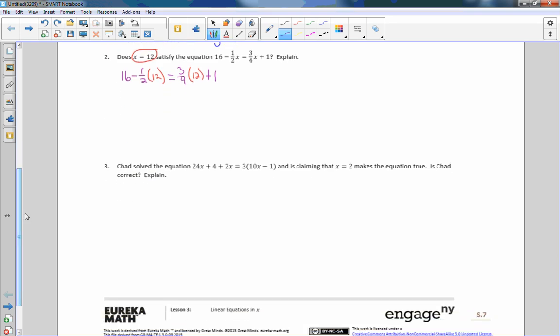We want to know if that is true. PEMDAS says to multiply first, order of operations, multiply first, and then add, subtract. So, when we do that, I get 16. Negative times a positive is negative. One half of 12 is 6, equals three quarters of 12. This is like 12 over 1. Reduce, 3 times 3 is 9 plus 1. 16 minus 6 is 10. 9 plus 1 is 10.